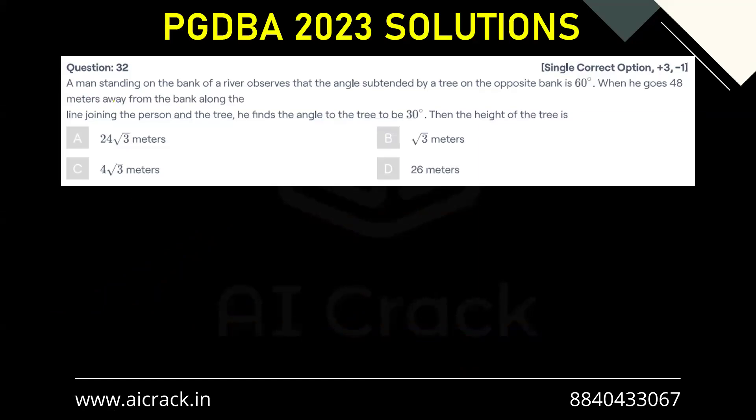Let's solve question number 32. A man standing on the bank of a river observes that the angle subtended by a tree on the opposite bank is 60 degrees. When he goes 48 meters away from the bank along the line joining the person and the tree, he finds the angle to be 30 degrees. Then the height of the tree is?